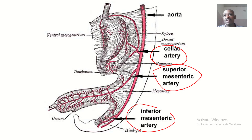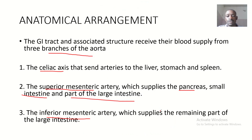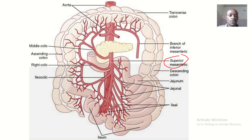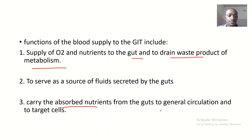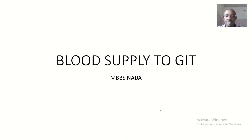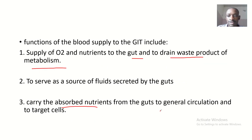To summarize, you should know both the arterial supply to the GIT and the venous drainage from the GIT. See you in the next tutorial — bye for now.